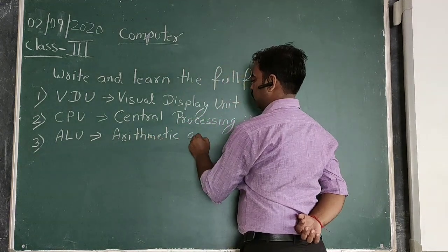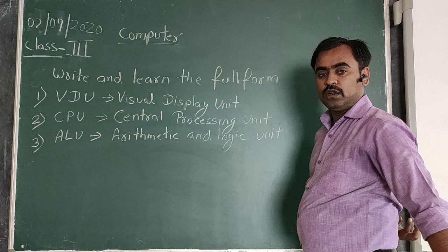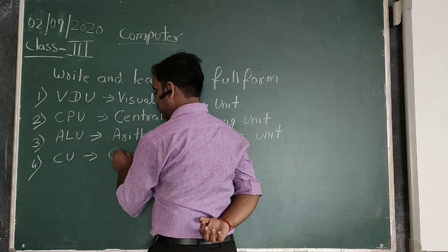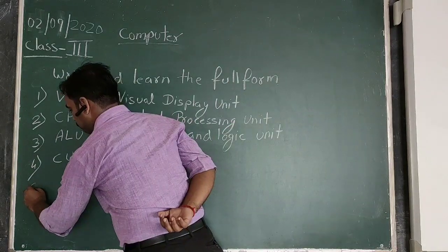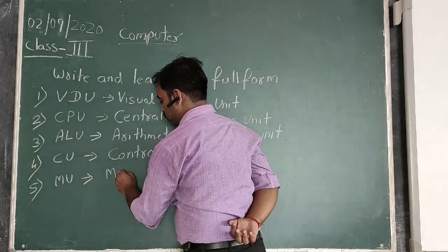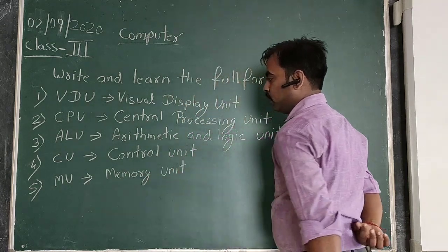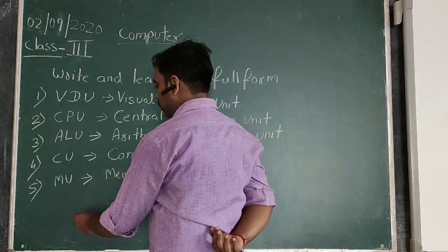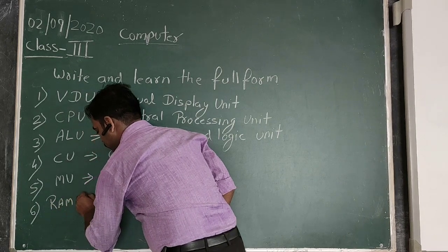Third is ALU - Arithmetic and Logic Unit. Fourth one is CU - Control Unit. Fifth, MU - Memory Unit.